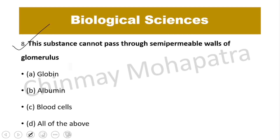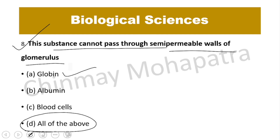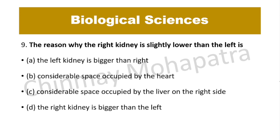Question number 8: What substances cannot pass through the semi-permeable wall of the glomerulus? The glomerulus performs ultra-filtration. The answer is all of these — globin, albumin, and blood cells — because they are essential for our body.